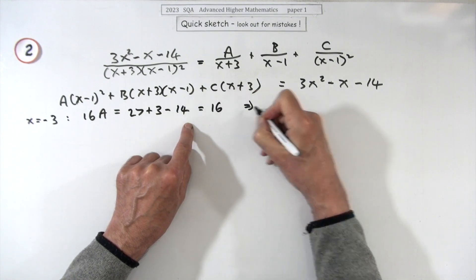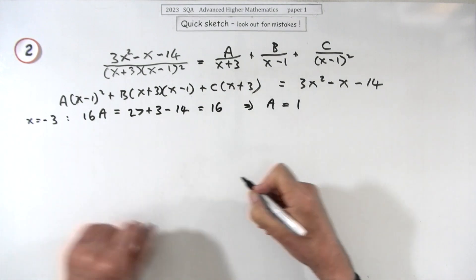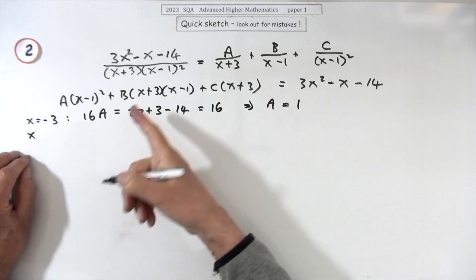Which comes to 16, which is very handy because that makes A equal to 1. That's the first one—right, that one's done.